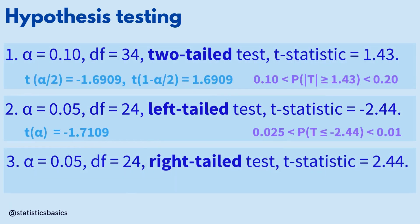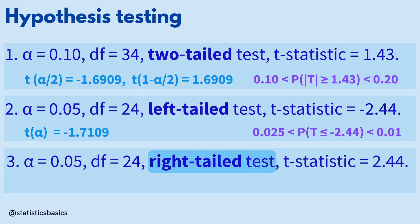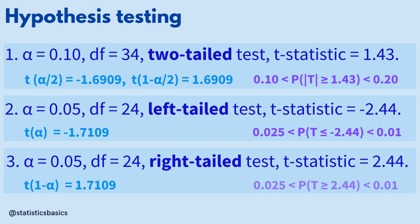For the third case, the significance level and degrees of freedom are the same as in the second test. However, since this is a right-tailed test, the t-critical value will have the same magnitude but a positive sign. This is because the t-distribution is symmetrical around its mean of 0. The p-value will also be the same because the test statistic has the same absolute value.